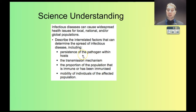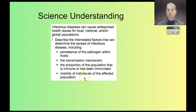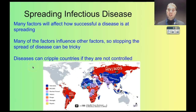We're going to look at how pathogens persist in organisms, transmission mechanisms, the proportion of the population that's immune or has been immunized, and how mobility of individuals affects the spread of disease. There are many different factors that can affect how successful a disease is at spreading, and many of the factors influence other factors, so it can get quite complicated to stop the spread of a disease.